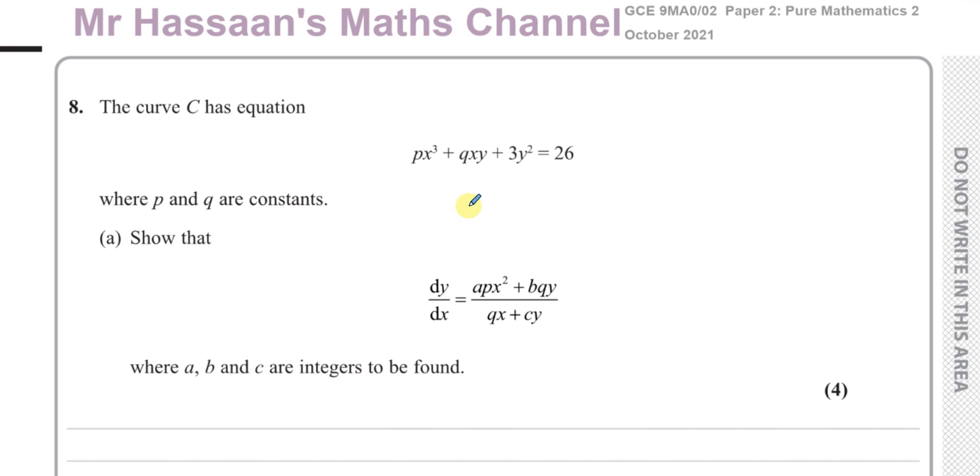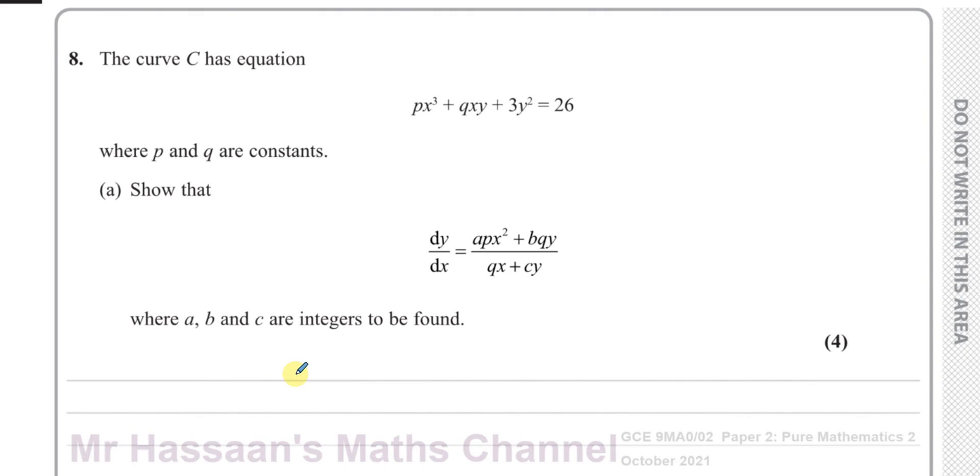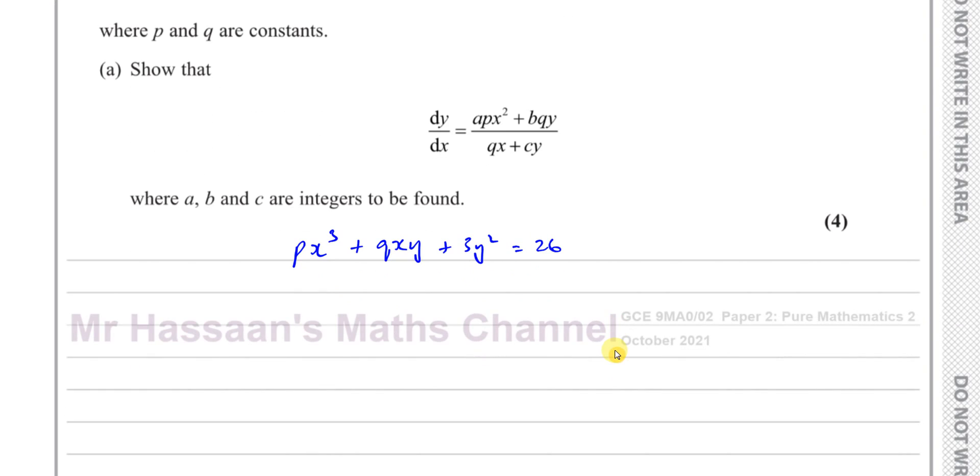Okay, so we've got to basically differentiate this using implicit differentiation. So we start off with px³ + qxy + 3y² = 26. We have to differentiate every term with respect to x. Now p and q are constants. So when I differentiate px³ with respect to x, I'm going to get 3 times px². So whatever number is here, 3 multiplies by that number. And then I take 1 from the power.